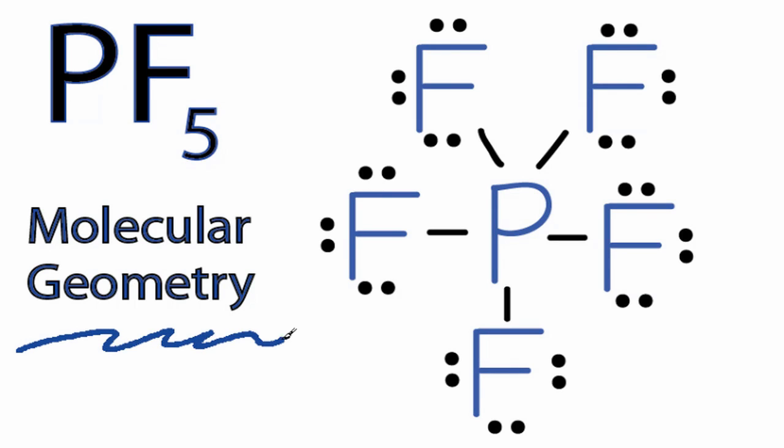So to find the molecular geometry for PF5, we'll first look at the Lewis structure. We can see we have five fluorine atoms attached around that central phosphorus atom.